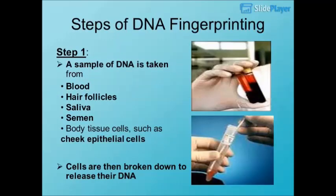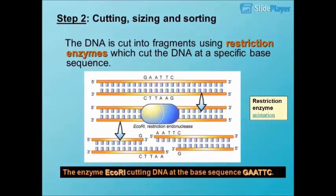Steps of DNA Fingerprinting. Step 1: A sample of DNA is taken from cells, which are then broken down to release their DNA. Sources include blood, hair follicles, saliva, semen, and body tissue cells such as cheek epithelial cells.